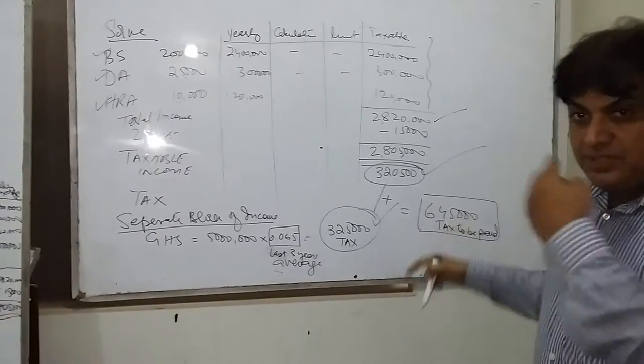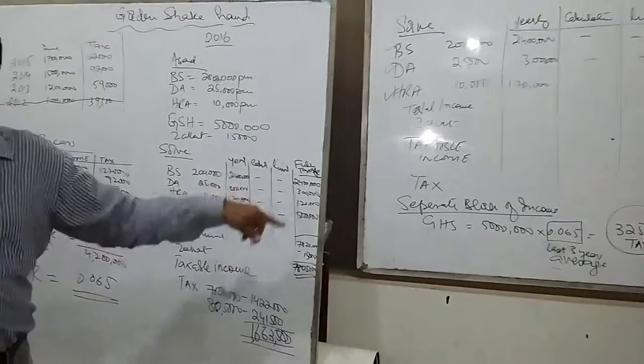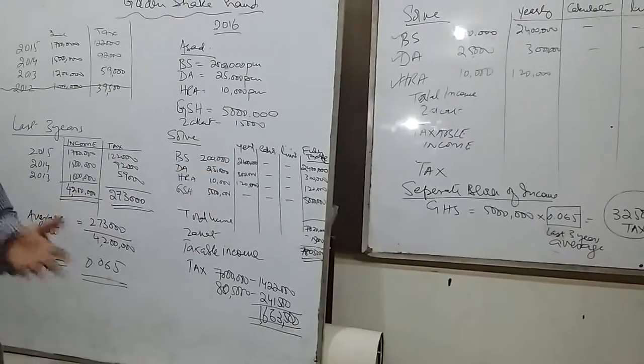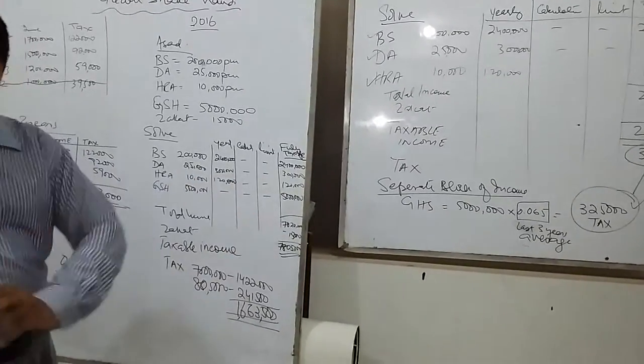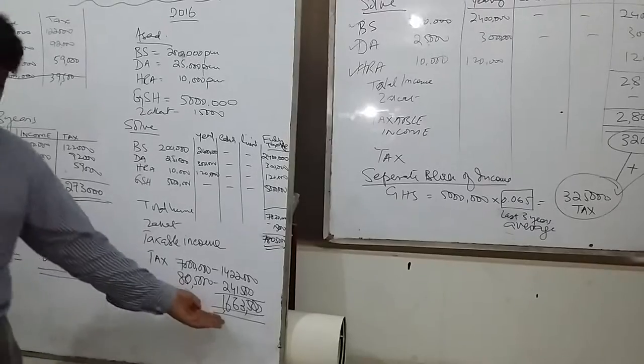And if we don't do this and we have to add the tax on the golden shake-end, if we add income in our income and add it, we will have to make it 78,000 to 20,000 and how much tax we have to pay for the tax.